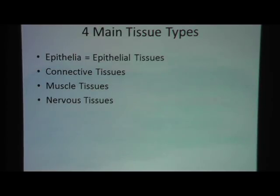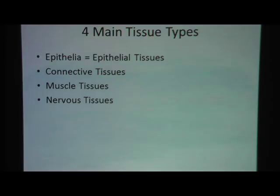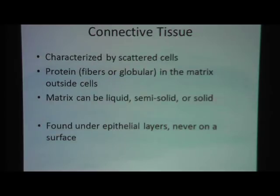There are four main tissue types in the body: epithelial tissue, connective tissue, muscle tissue, and nervous tissue. Here we're going to focus on connective tissue.